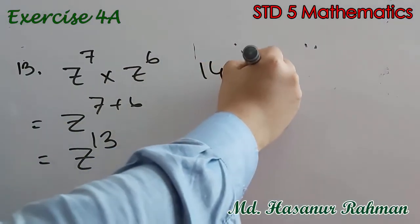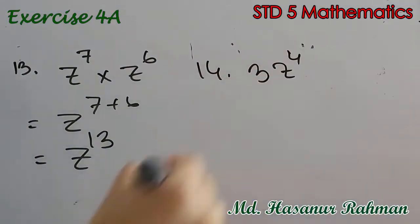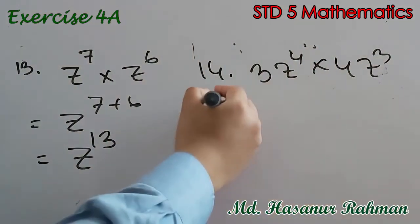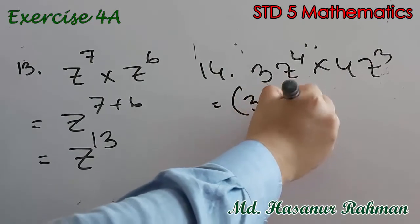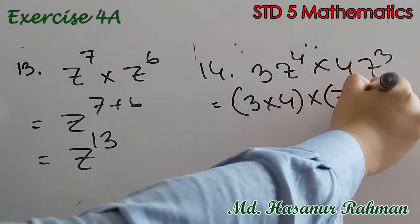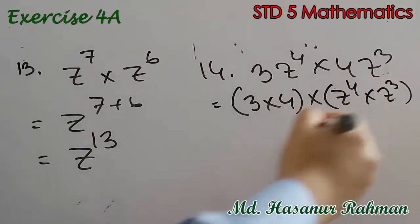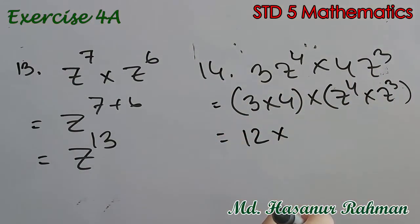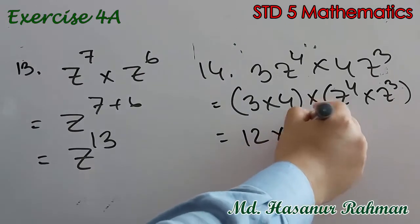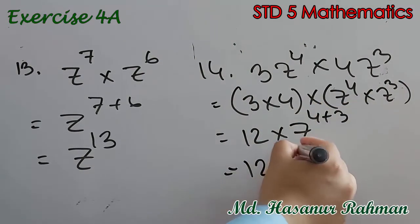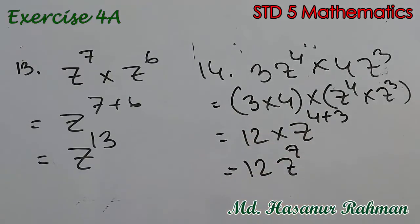Now number 14 says 3z to the power 4 into 4z cubed. First we multiply the numbers: 3 into 4 into z to the power 4 into z cubed. So 3 into 4 is 12 into z to the power 4 plus 3, which is z to the power 7. So 12z to the power 7 is the answer of number 14.